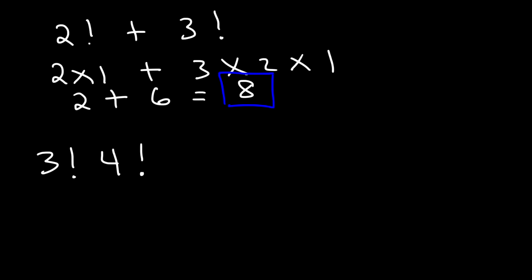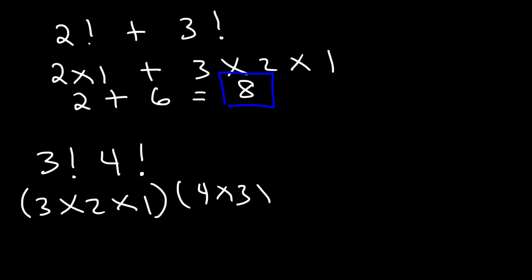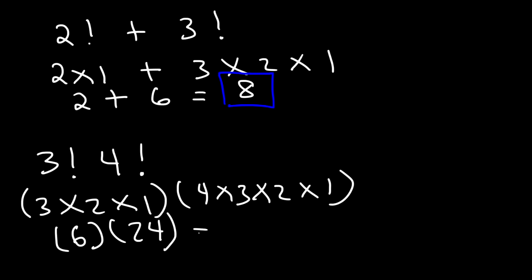Now 3 factorial times 4 factorial. We know 3 factorial is 3 times 2 times 1, and 4 factorial is 4 times 3 times 2 times 1. 3 times 2 is 6. 4 times 3 is 12 times 2, that's 24. So we have 6 times 24. 6 times 20 is 120 and 6 times 4 is 24. 120 plus 24, that's 144. So that's the answer for that example.